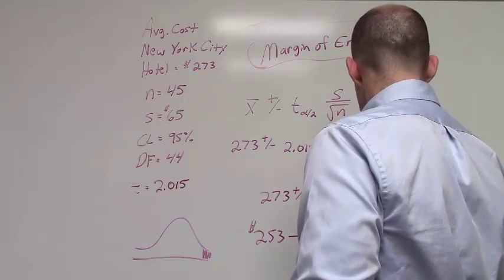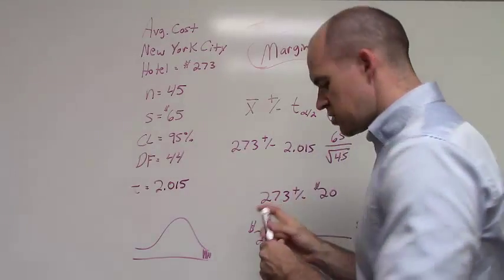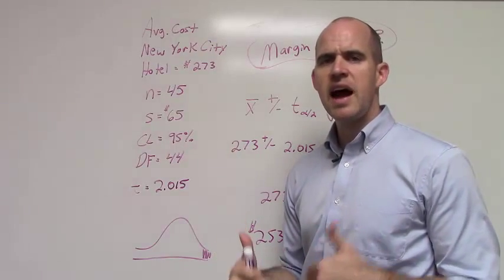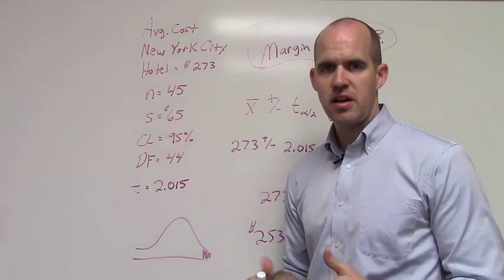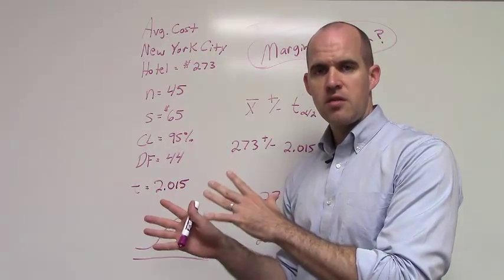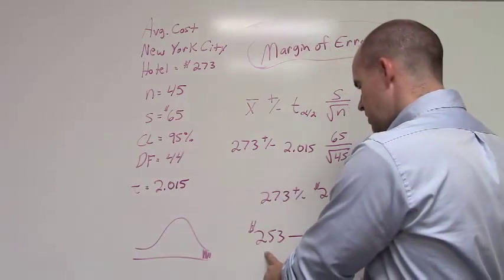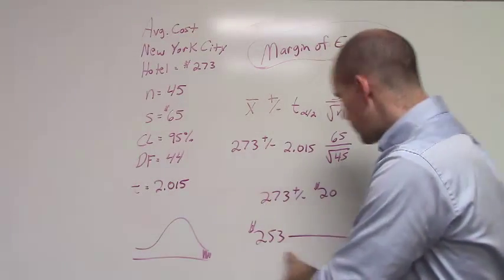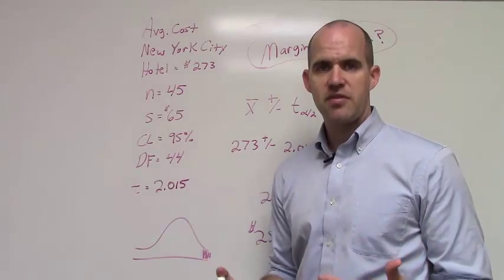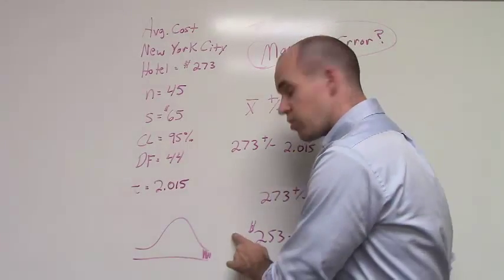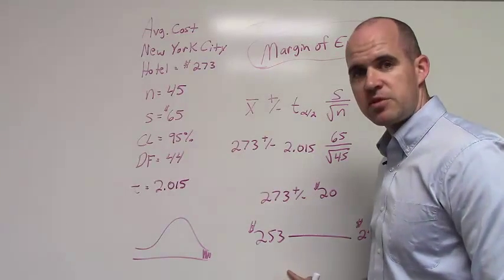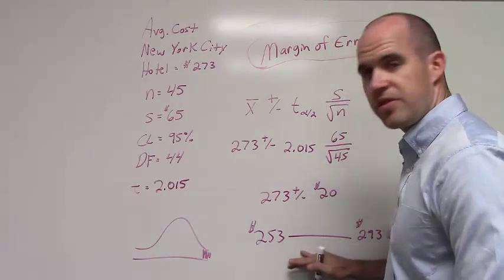So, another way of interpreting that would be to say we have an interval of 253 all the way up to 293. So, while our sample mean is $273, I can be 95% confident that the real hotel cost, the real mean for New York City, is somewhere between $253 and $293 at a 95% confidence level. So, there is a 5% chance it could be lower or higher than this, but I can be 95% confident that it's within this particular interval.